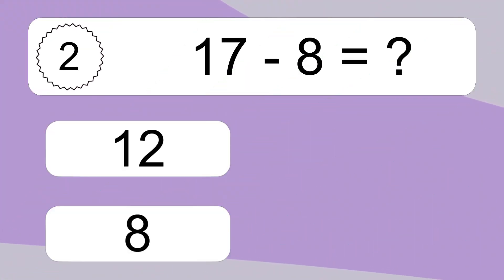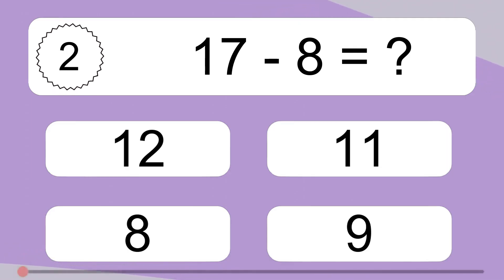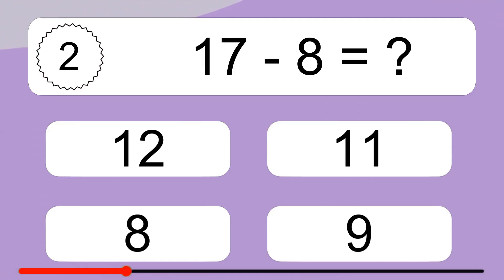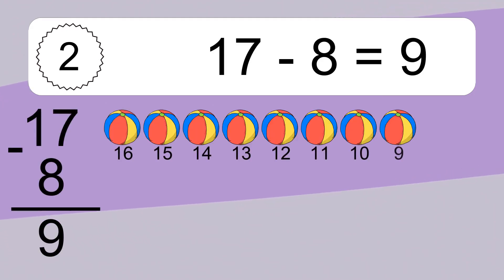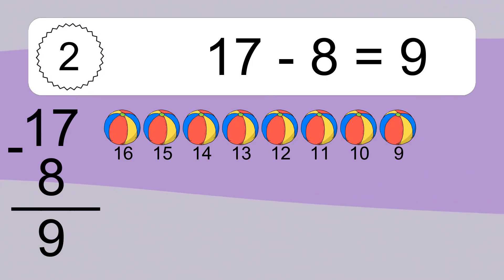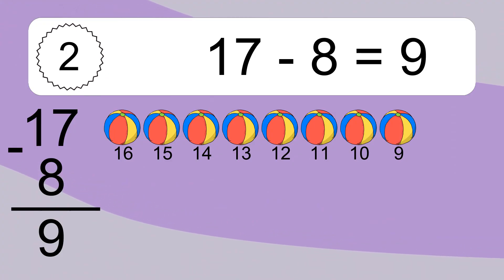17 minus 8 equals what? 17 minus 8 equals 9. Let's count it. 16, 15, 14, 13, 12, 11, 10, 9.